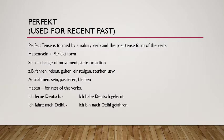Now the next topic is perfect tense. Before we start solving perfect exercises, let's understand what perfect is. There are two types of past tense in German: one is perfect and one is Präteritum. We have already seen the Präteritum form of haben and sein. Perfect is used for recent past — whatever happened a few years, months, or weeks ago.